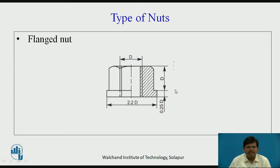Next we have flange nut. Flange nut is a kind of hexagonal nut with a flange-like structure attached to it. It is a single entity with a flange formed at the bottom. This type of nut is used where the hole size is big and you want to use a bolt — clamping can be easily done with the help of this flange nut.